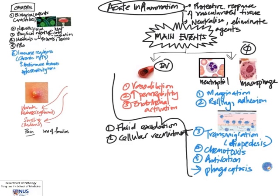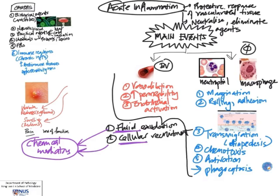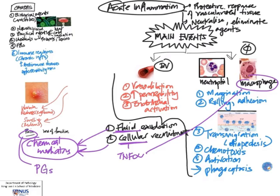Just to briefly touch on chemical mediators — first, where do they come from? From fluid and cells, including leukocytes, endothelial cells, and platelets. A very important chemical mediator is tumor necrosis factor alpha, or TNF-alpha, which is responsible for many of the systemic effects of inflammation such as fever and loss of appetite. Pain is caused by prostaglandins, which are derived from arachidonic acid found in the cell membranes of leukocytes as well as blood vessel and endothelial cells. Understanding these chemical mediators and cellular events helps us understand the mechanism of anti-inflammatory drugs commonly used, such as corticosteroids.